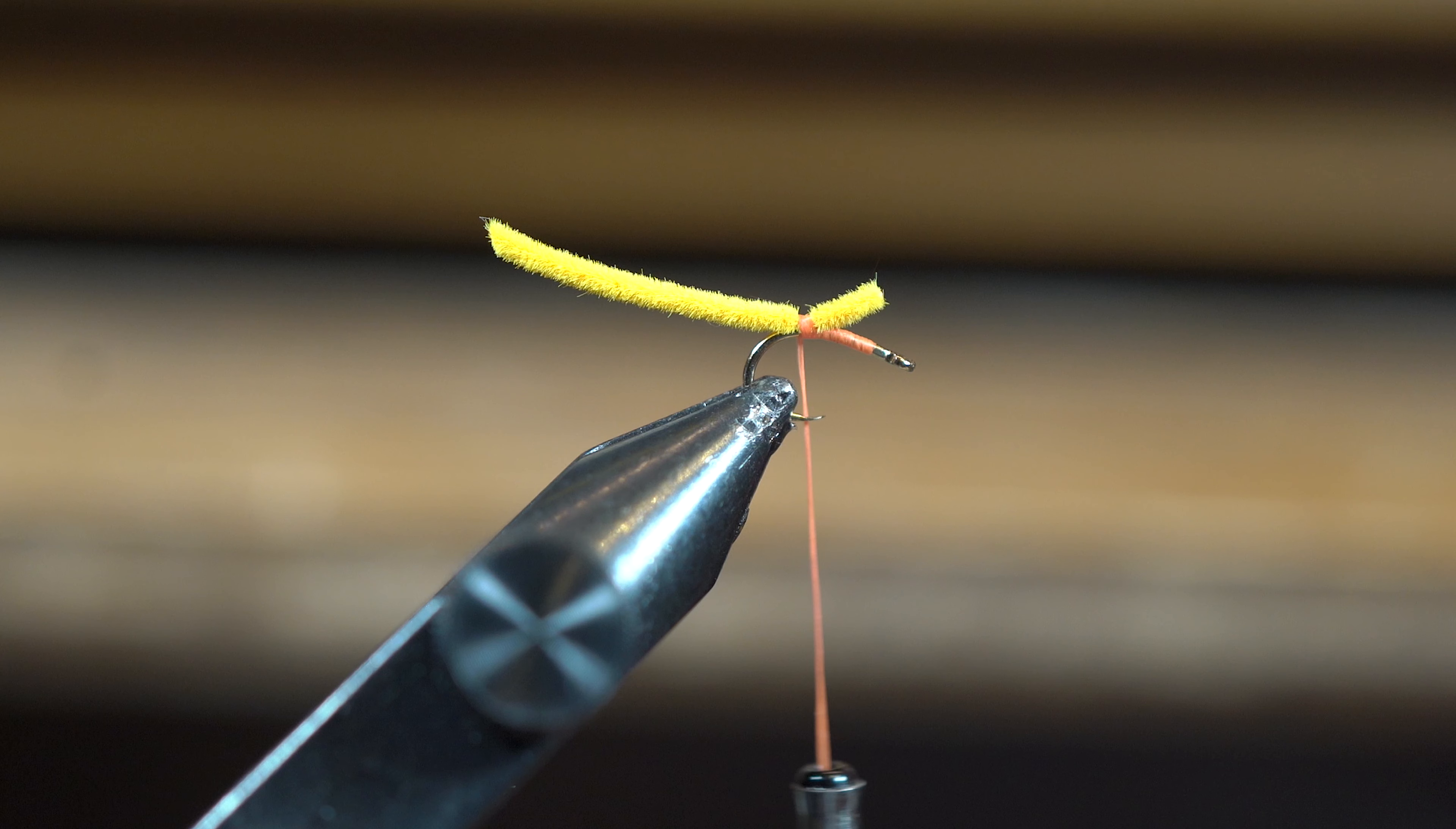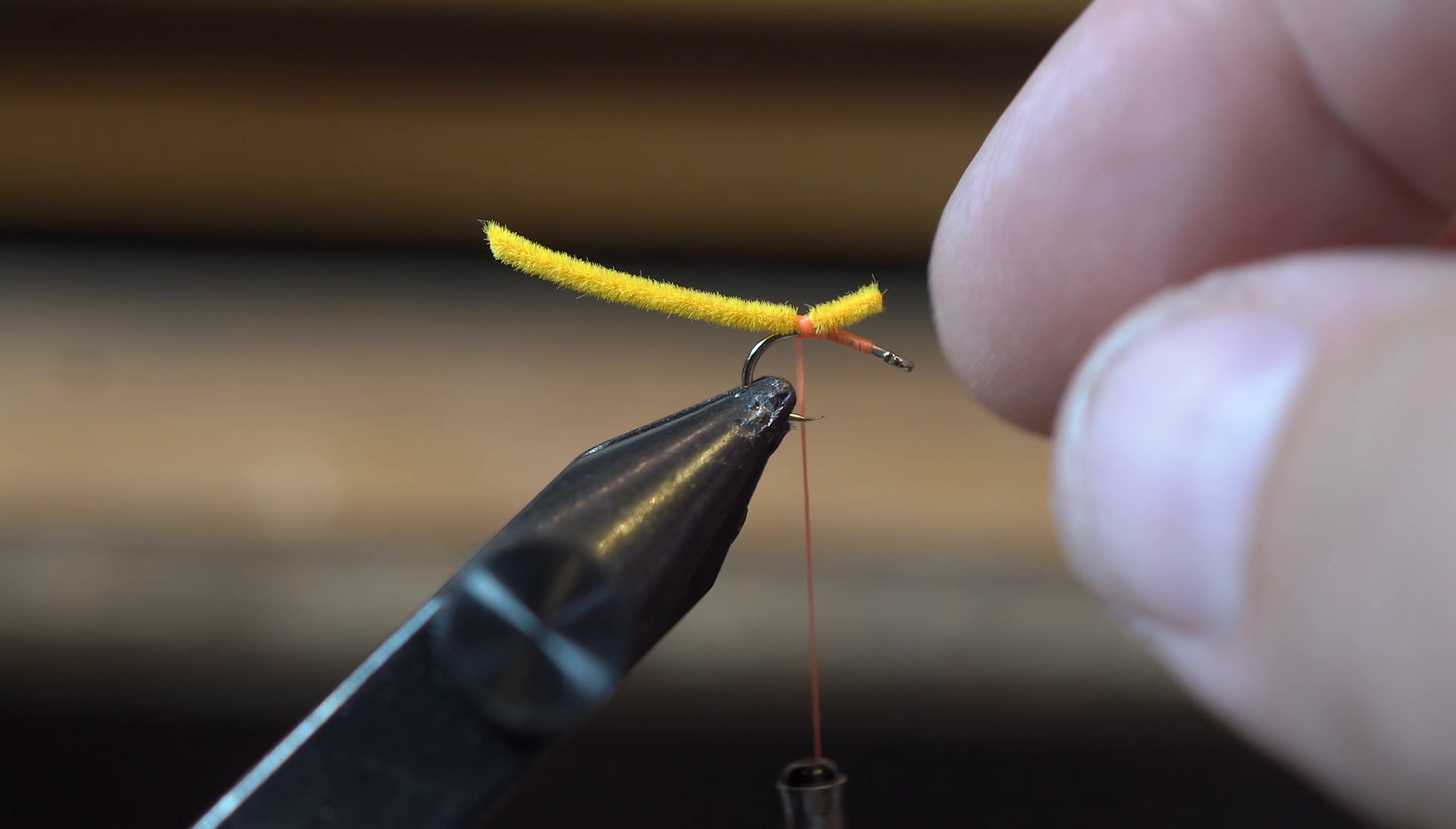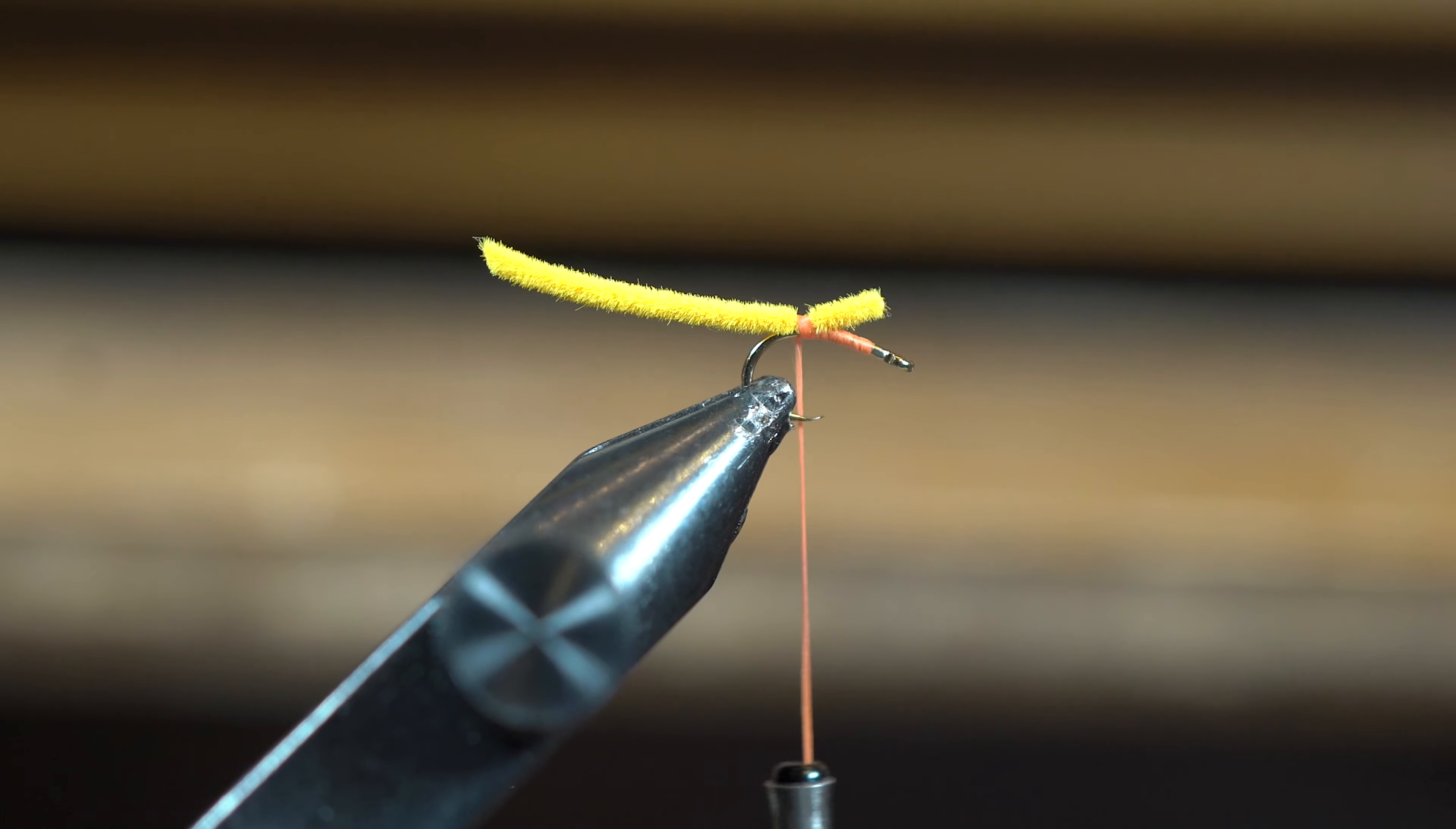With this fly we're using a product called micro chenille—it's basically ultra chenille but a little bit smaller. Today we're going to tie this one in orange. I've got a size 16 hook and I simply wrap that chenille with three or four wraps right at the back of the hook, right where the barb comes up.